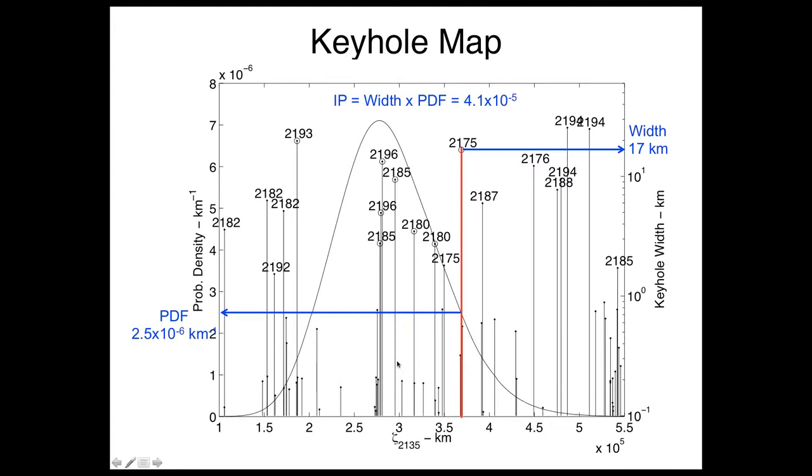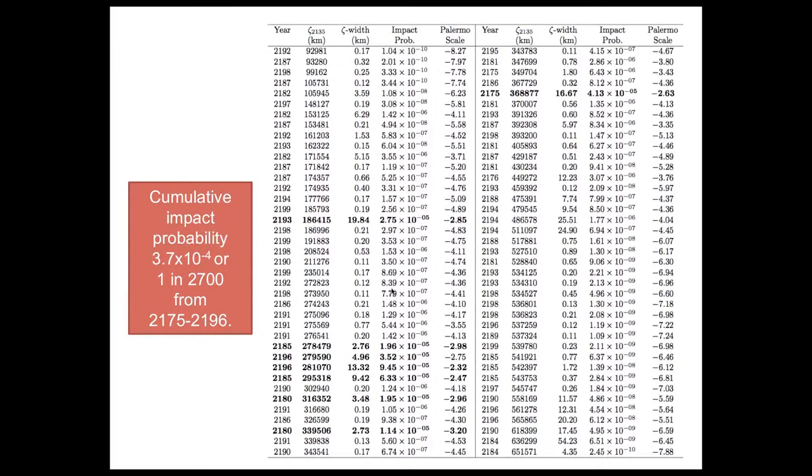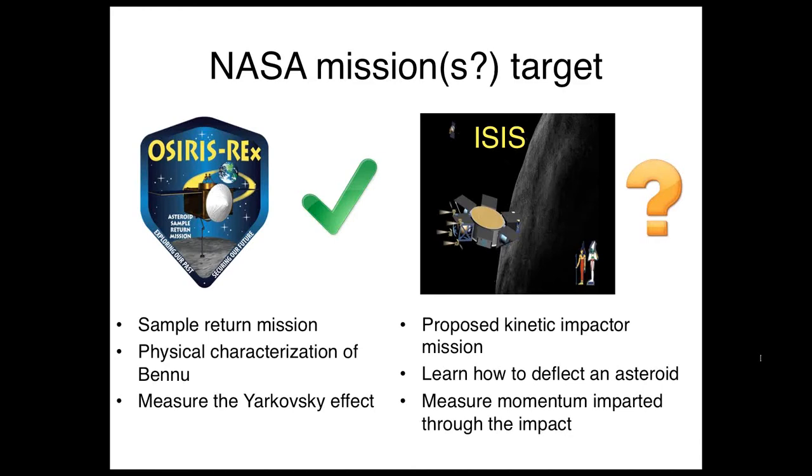If you take all of these keyholes and figure out the impact probabilities, there's several dozen of them, and you add them all together, you get something like 1 in 2,700 impact odds for about a two-decade period late in the next century.